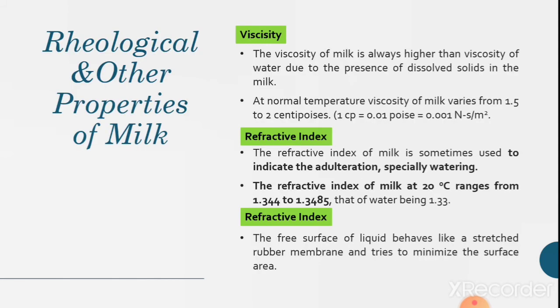The next properties of the milk are rheological and other properties. Viscosity. The viscosity of milk is always higher than the viscosity of water due to the presence of dissolved solids in the milk. At normal temperature, viscosity of milk varies from 1.5 to 2 centipoise. One centipoise is equal to 0.01 poise which is equal to 0.001 Ns per meter square.